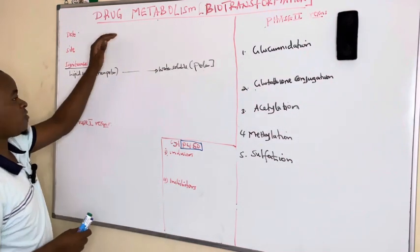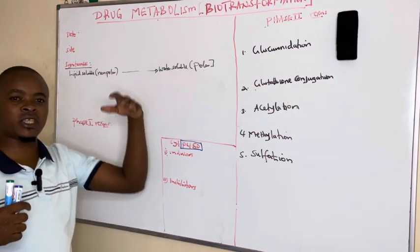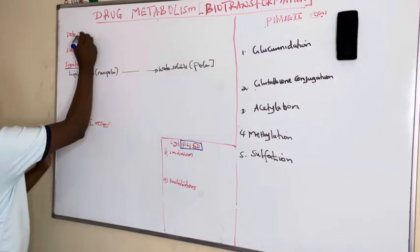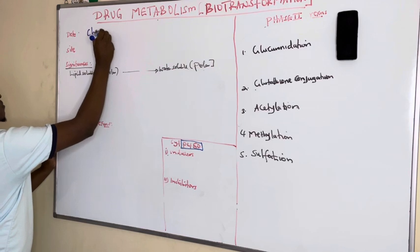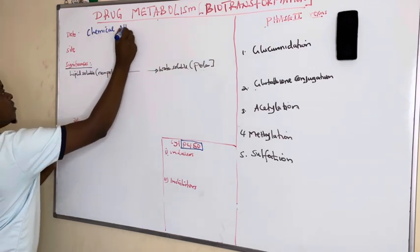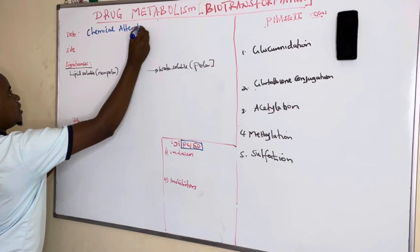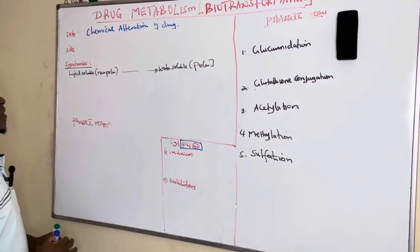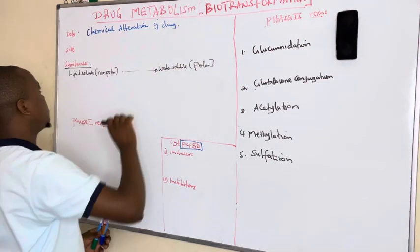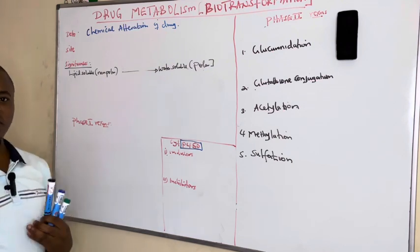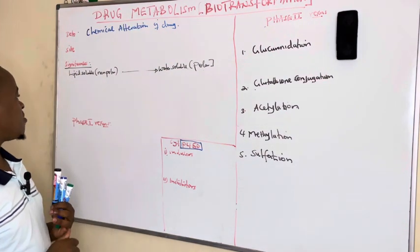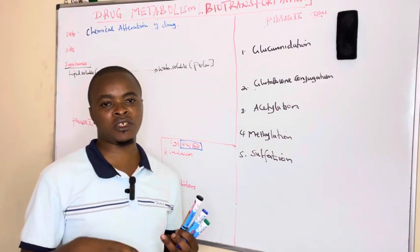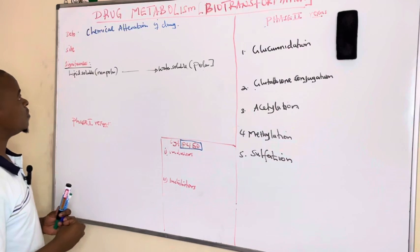Drug metabolism, or what we call a xenobiotic, is the chemical alteration of the drug or a xenobiotic — by adding a group or removing a functional group. The drug is either made active, inactivated, or converted into an active metabolite.